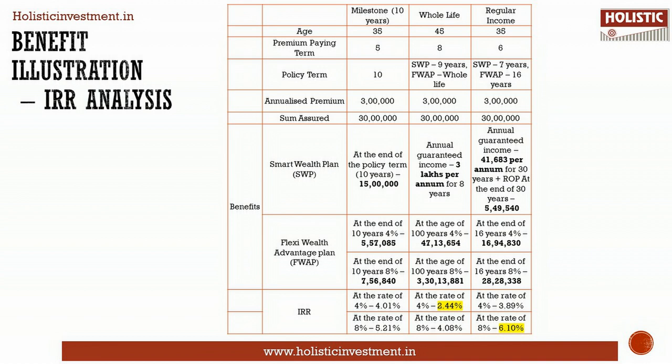Also, there is no guaranteed return for the Flexi Wealth Advantage Plan — the assumed rates of return are 4% and 8%. Max Life Smart Capital Guaranteed Solution does not help the investor in protecting their investment from inflation. The IRR under various combinations is far below the inflation rate. The Max Life Smart Capital Guaranteed Solution is not suitable for wealth accumulation.